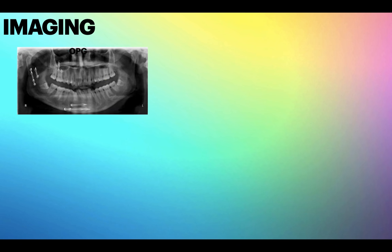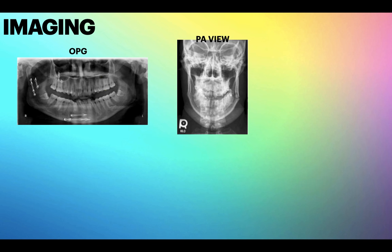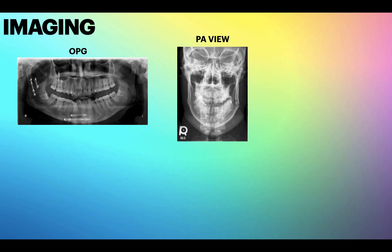Imaging — OPG: the most commonly available 2D picture is the OPG, which is very cost-effective. Any bony pathology or trauma can be easily appreciated on OPG. PA view is not commonly advised, but during trauma it may be used.